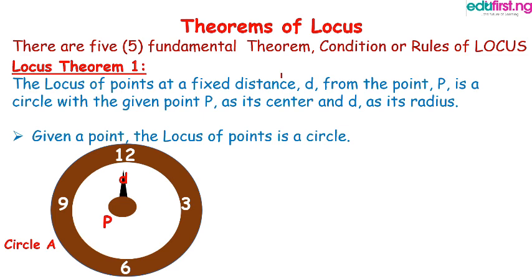The locus of points at a fixed distance d from the point P is a circle with the given point P as its center and d as its radius. What this theory is saying generally is that when you are given a fixed point that is not moving, that is stationary, any point around it will form a circle.